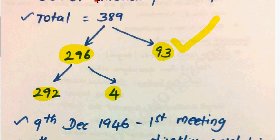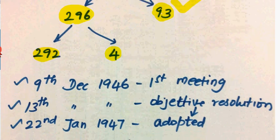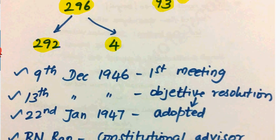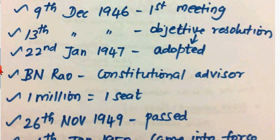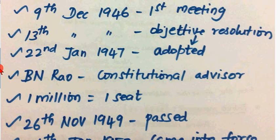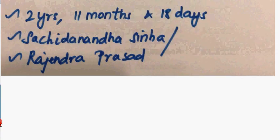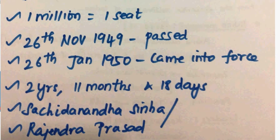They are not in the province. There are 296 members in total. The first meeting is on 9 December 1946. Who is the president of the Constituent Assembly?